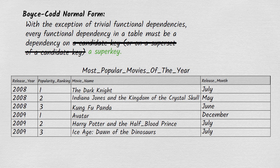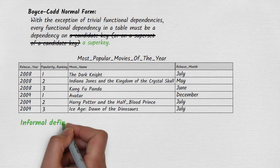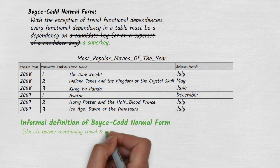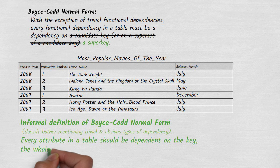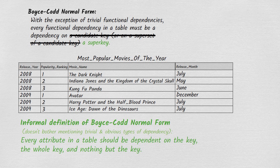To sum things up, Boyce-Codd normal form overcomes a loophole in the definition of third normal form — but this loophole is an obscure one that only becomes apparent when definitions are expressed in a suitably formal and rigorous way. In the day-to-day practice of database design, there's really no need to get bogged down in formality. Ignoring trivial and obvious types of dependency, we can express Boyce-Codd normal form informally like this: every attribute in a table should be dependent on the key, the whole key, and nothing but the key — where "the key" is shorthand for every candidate key.